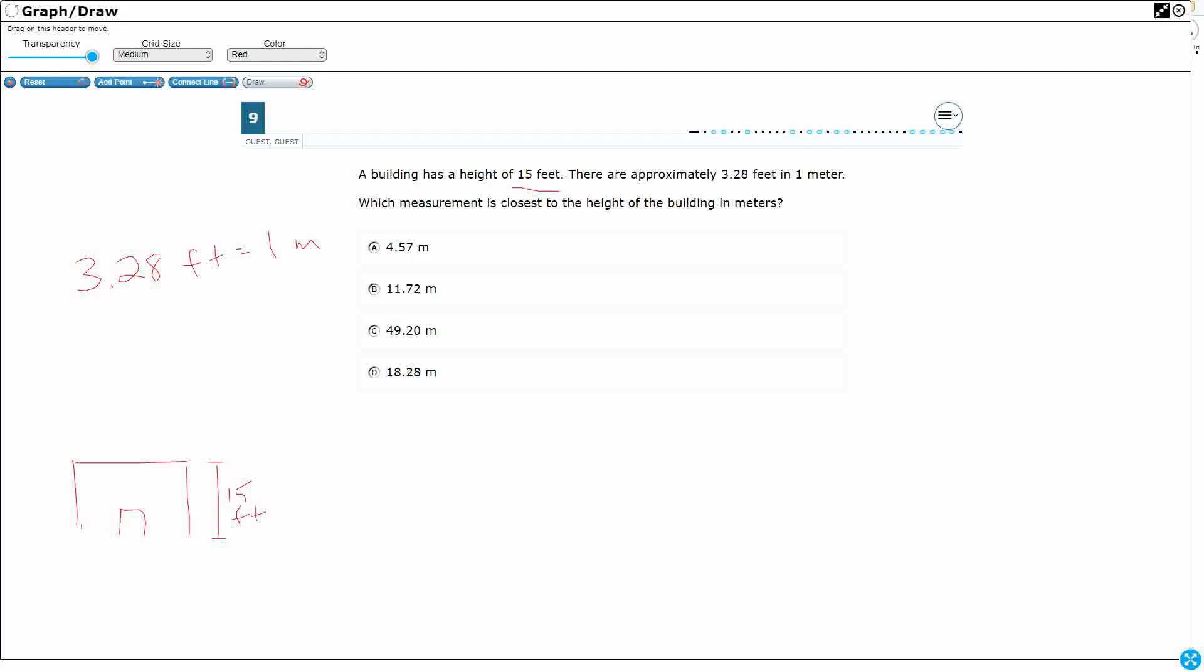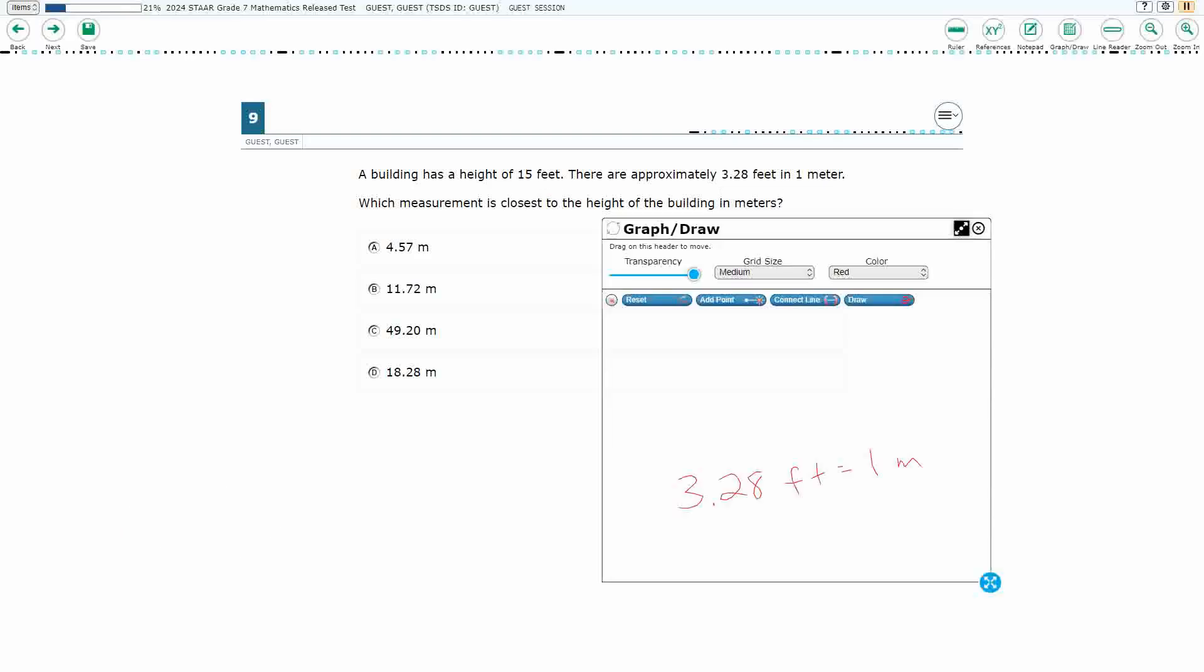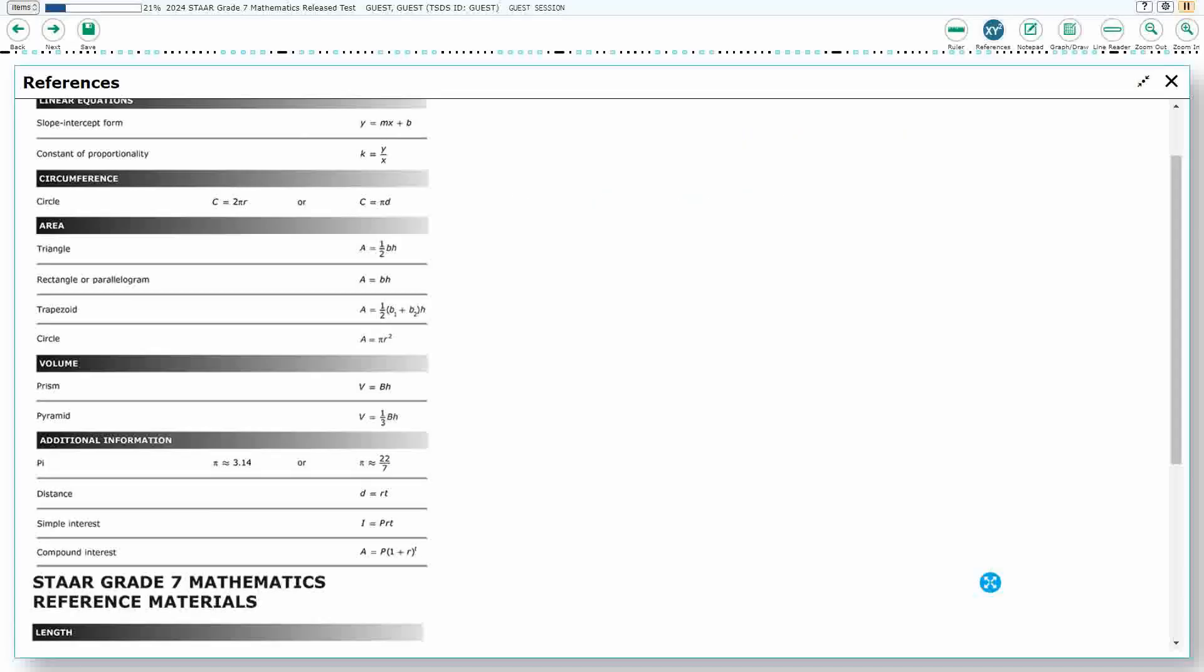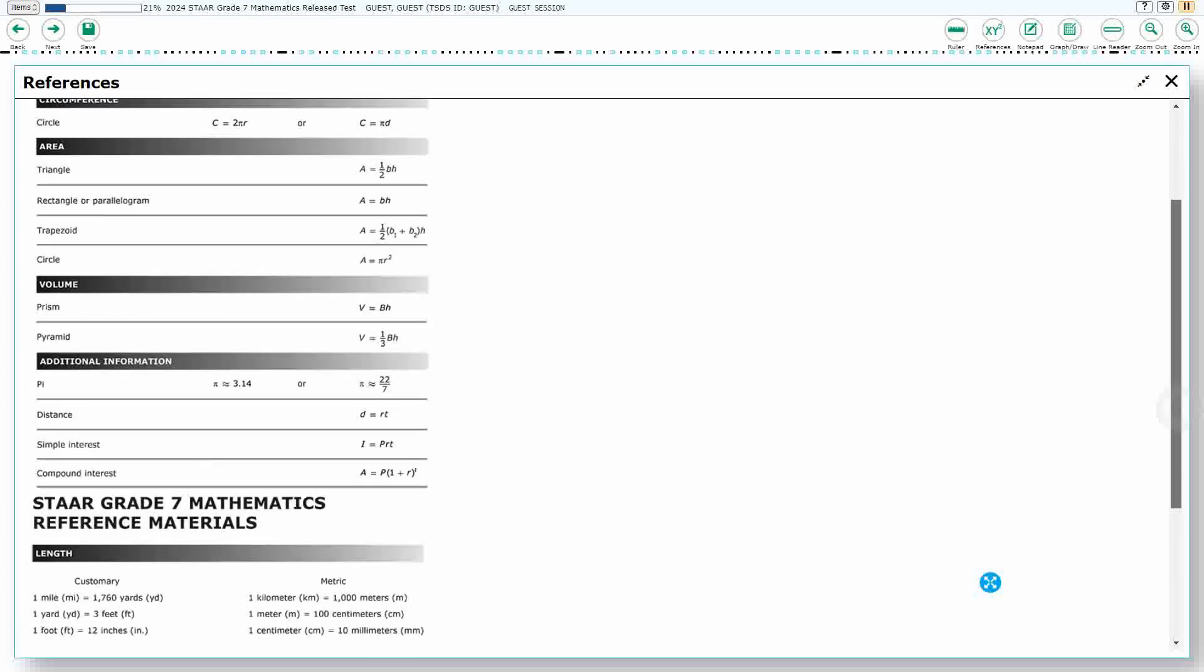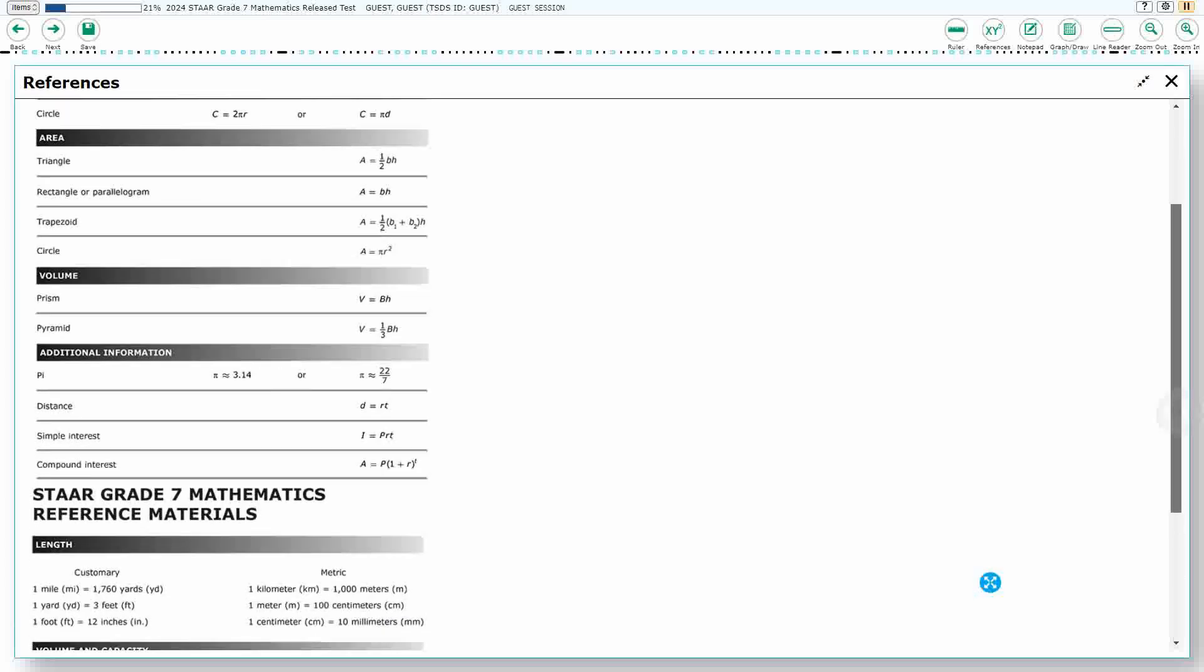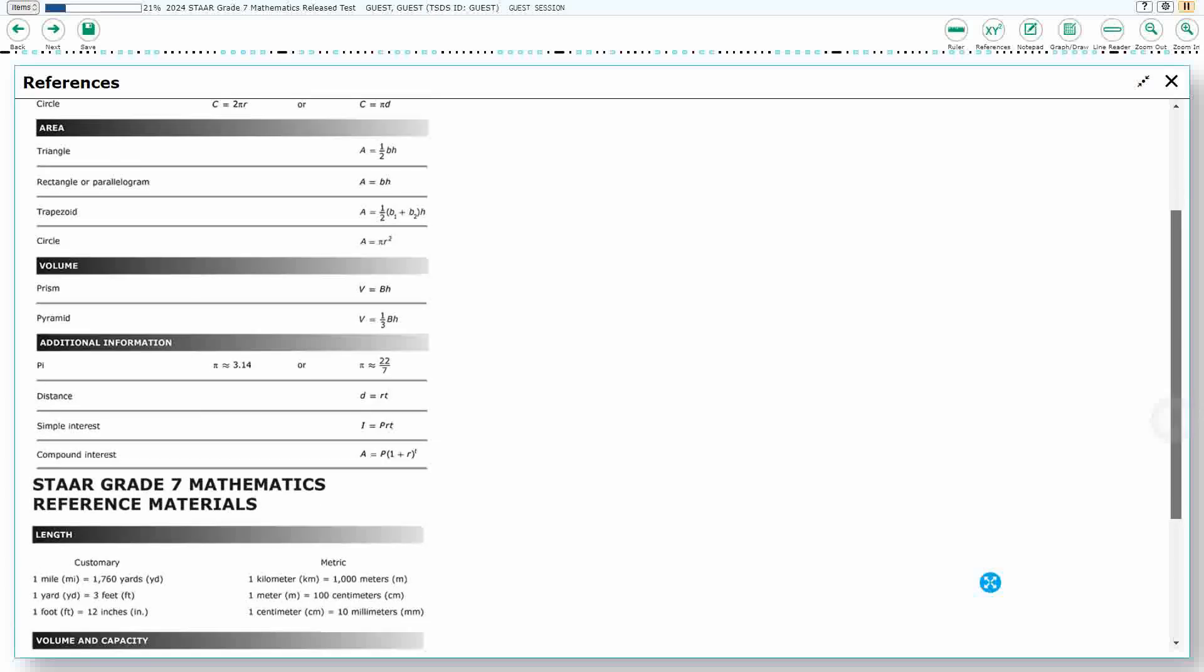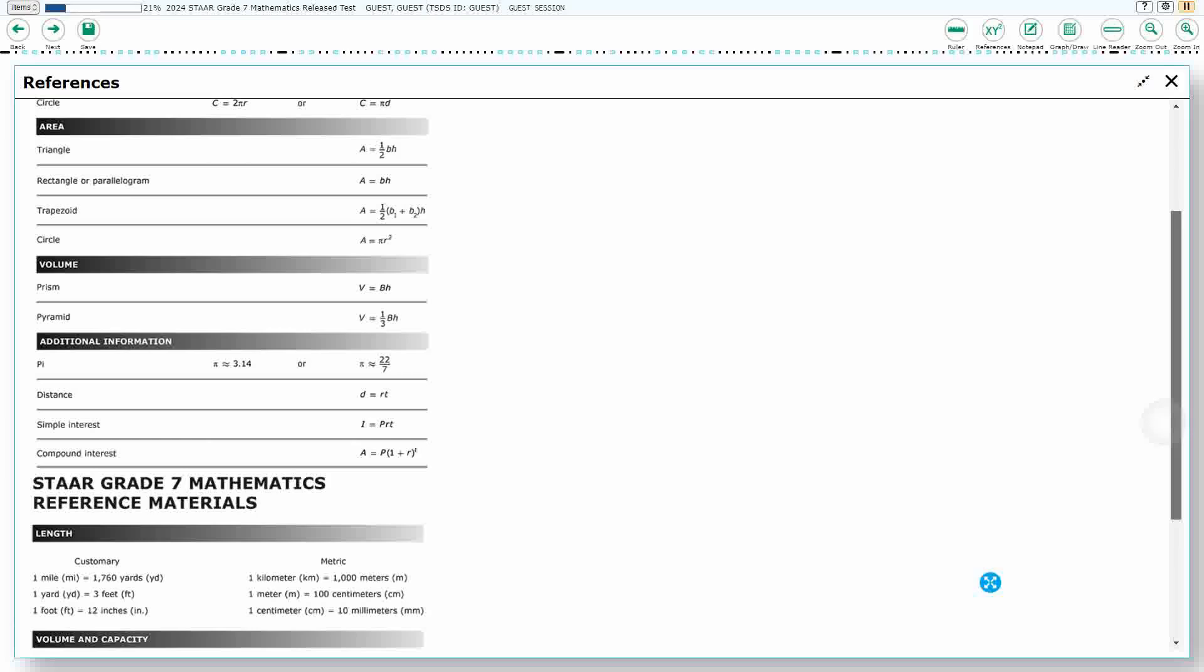So which measurement is closest to the height of the building in meters? So we're converting this 15 feet into meters, and you notice that they have to give us this conversion here, because if we look at our reference materials, we're not going to see any of those conversions. The conversions we get here, like look at the bottom left, you're going to see the customary miles to yards, yard to feet, foot to inches. That stays within the customary measurement system. Over on the right, you see kilometer to meter, meter to centimeter, centimeter to millimeters. That stays within the metric system.